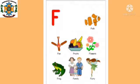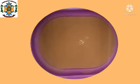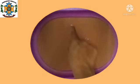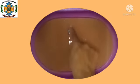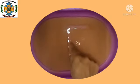F for family, fish, flowers, fairy. Now we will write letter F on the set: standing line, sleeping line, and in the middle a short sleeping line.